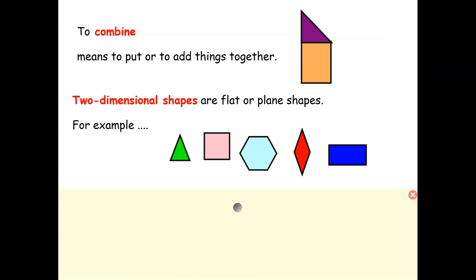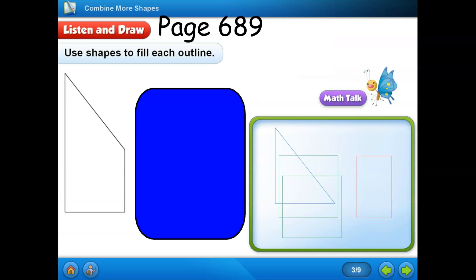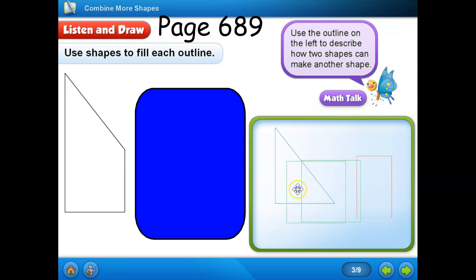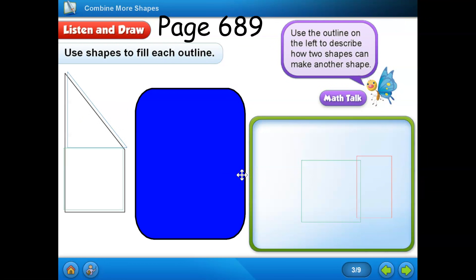Watch me. Let's turn to page 689. Listen and draw. Use the outline on the left to describe how two shapes can make another shape. Which two shapes can you use to make this new shape? I think I can use a square and a triangle to make this new shape. Now boys and girls, draw a line on the shape to show how the triangle and square are put together.